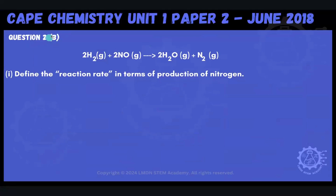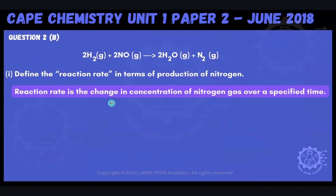The first question in part 2B says define the reaction rate in terms of the production of nitrogen. Nitrogen is one of our products, so the reaction rate is the change — or increase — in the concentration of nitrogen gas over a specified time, tracking how that changes over time to give us a rate of the reaction.